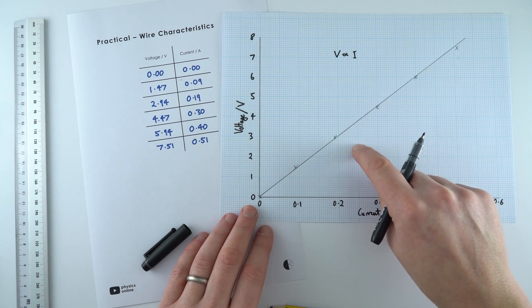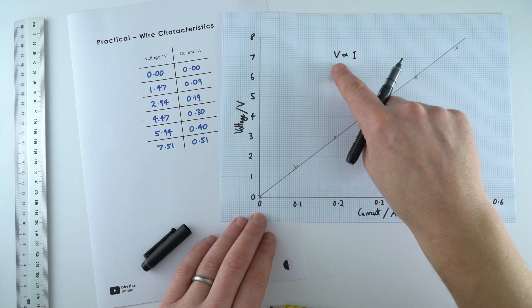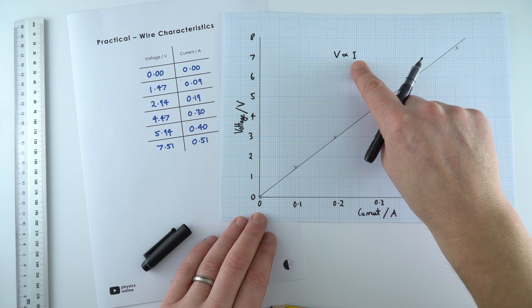And you'll see that it's very similar to the characteristic for a resistor, where we have a constant resistance because the potential difference or the voltage is proportional to the current.